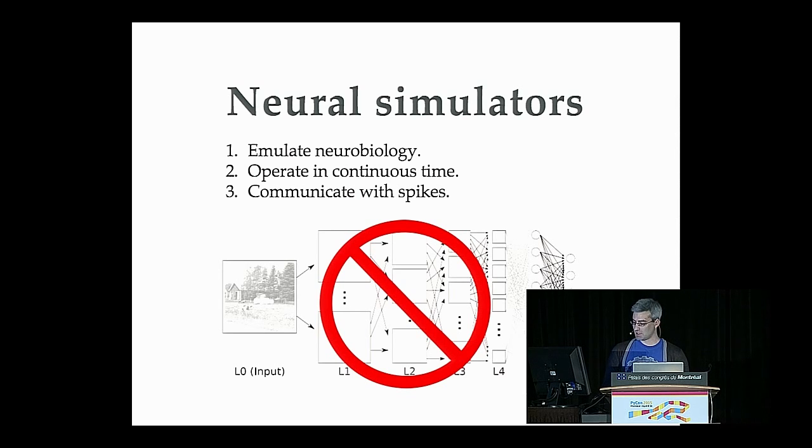But I bring up these three kind of rules as a way to differentiate neural simulators from other types of artificial neural network programs. So you may have heard about these kind of massively huge deep learning systems that Facebook and Google are using to process images and speech. That's not what I'm going to be talking about today. These systems don't attempt to emulate neural biology. In particular, they work in discrete time rather than continuous time, and they don't communicate with spikes.